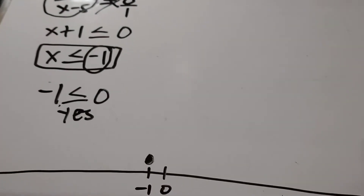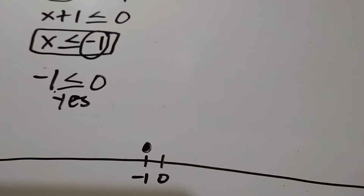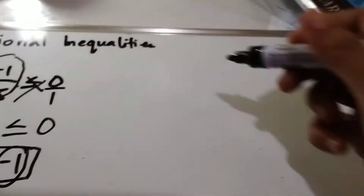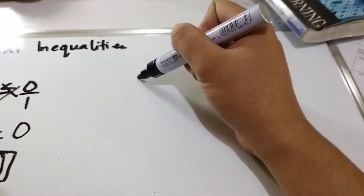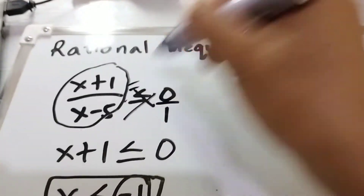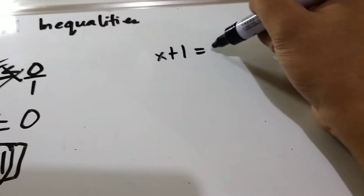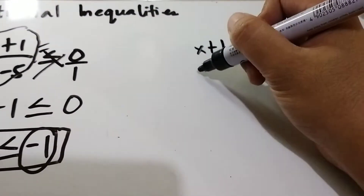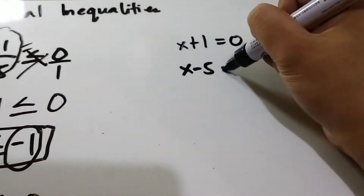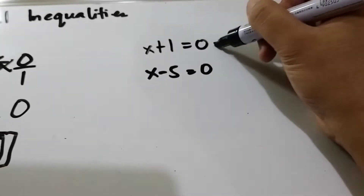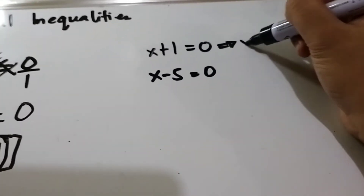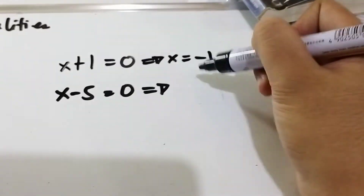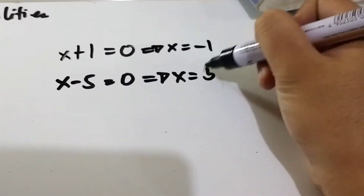The next step is to equate the numerator and denominator to 0. So the numerator, x plus 1, equals 0, and the denominator, x minus 5, equals 0. Simplifying: the numerator gives x equals negative 1, and the denominator gives x equals positive 5.